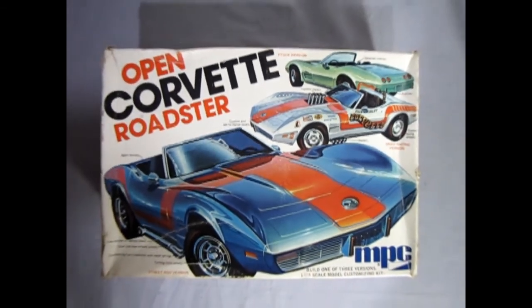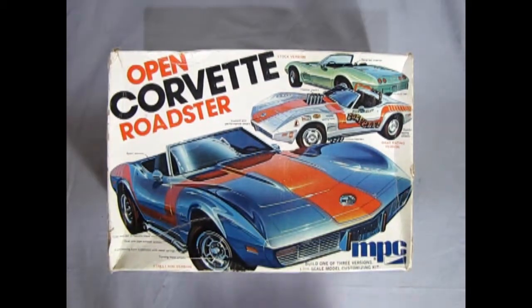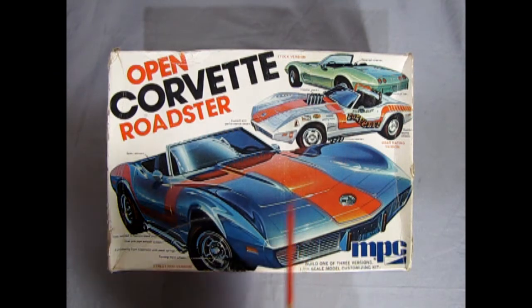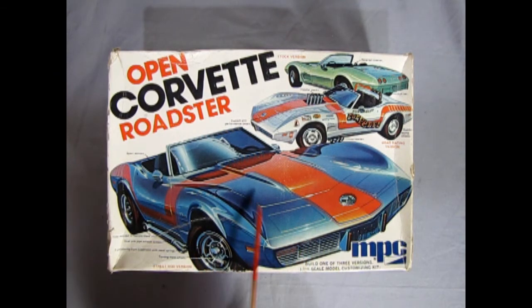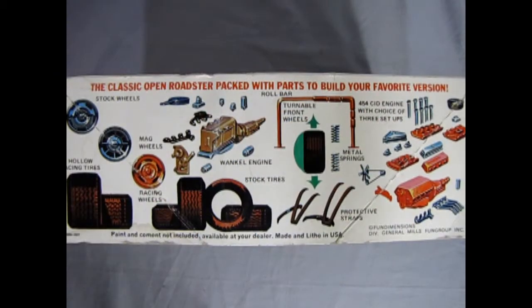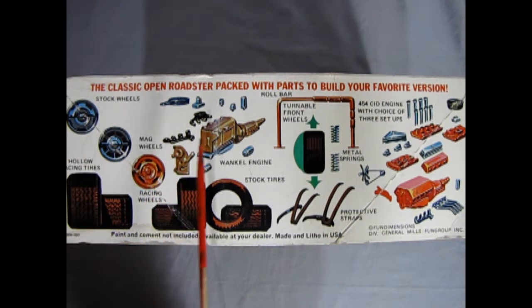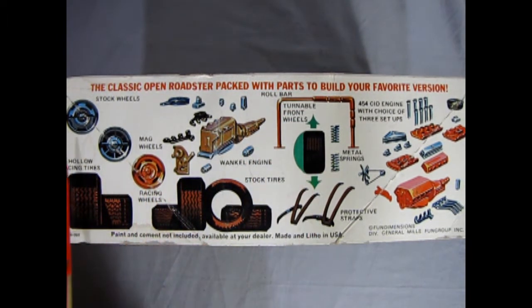Now we roll the clock all the way back to 1975 as we take a look at our Open Corvette Roadster model kit by MPC. In this model kit you can build one of three ways: as the stock version, the drag racing version, or the street rod version. The classic Open Roadster packed with parts to build your favorite version. Look at all these parts.